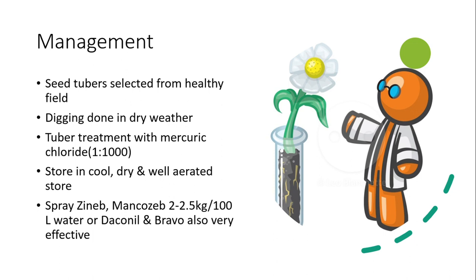In the early incidence of disease, we can spray fungicides in the field. This concludes our overview of late blight of potato. If you have any questions or suggestions, please comment. Thank you very much.